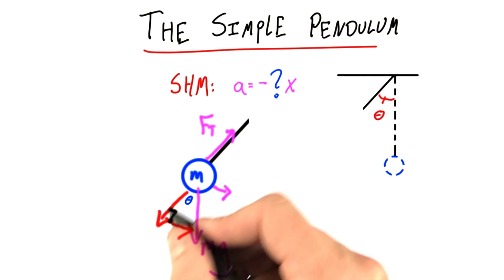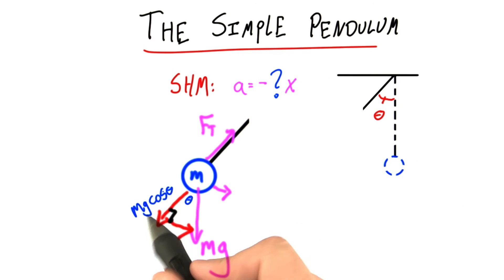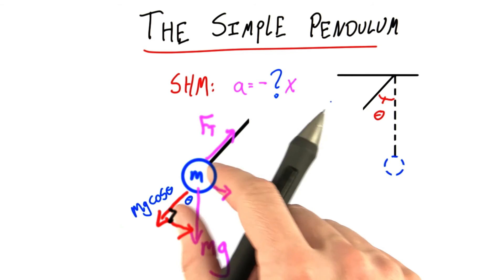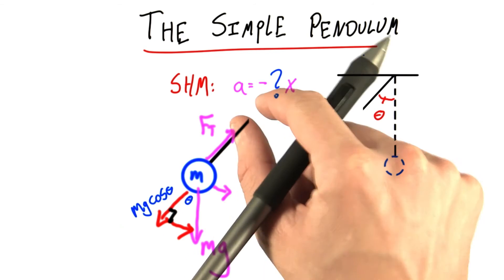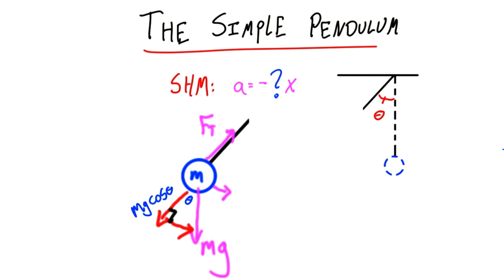This is a right triangle with a hypotenuse, and there's this side, which is mg cosine theta. This side's pretty uninteresting because I know it's going to exactly balance tension. How do I know that? Because the mass never accelerates towards the pivot point or away. It only accelerates perpendicular, directly back towards the equilibrium point.